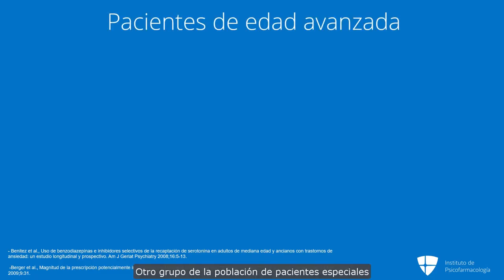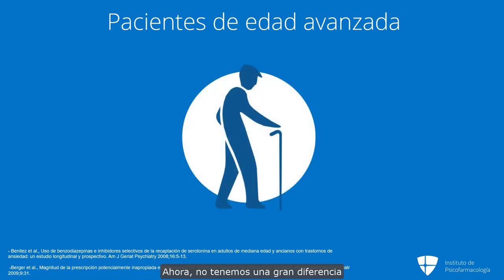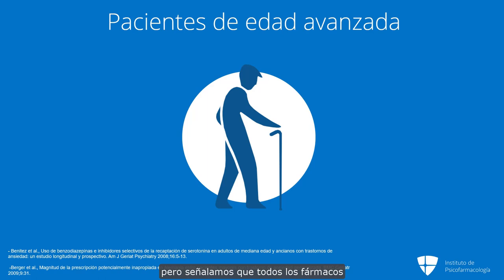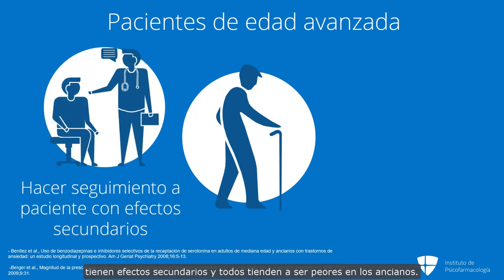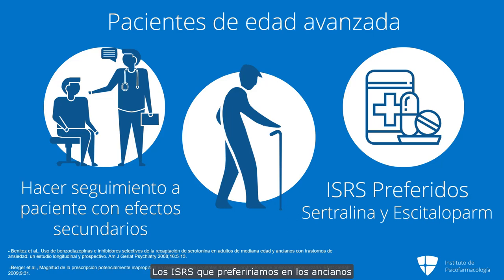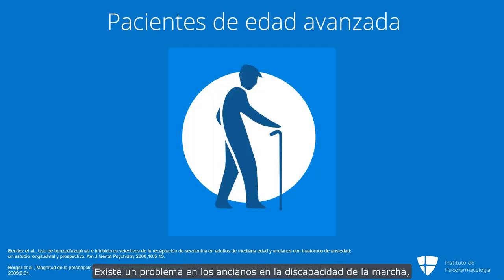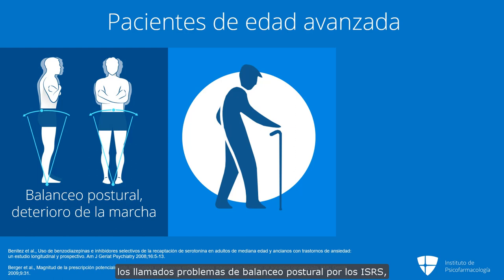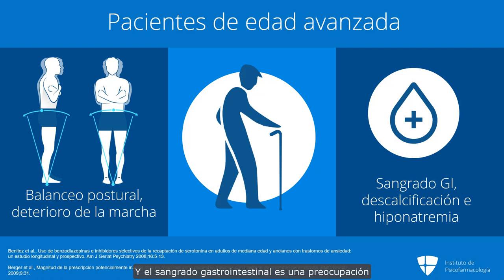Another special patient population is elderly people. We don't have a strong difference in the algorithm for them, but we do point out that all medications have side effects and they all tend to be worse in the elderly, so you have to monitor those side effects closely. SSRIs we would prefer in the elderly are sertraline and escitalopram — they have a somewhat better safety profile. There is a problem in the elderly of gait impairment and postural sway with SSRIs that is greater than in younger people, and gastrointestinal bleeding is a concern in all age groups but worse in the elderly.